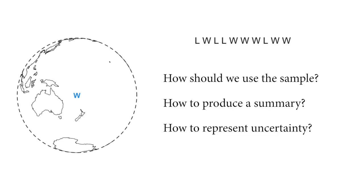Our estimand is the proportion of the globe covered by water. Here's an animation of the idea: we toss the globe a number of times, and when it comes to rest we mark where our finger is — water or land. We can do this nine or ten times. The questions we'll develop and answer are: how should we use the sample to produce an estimate, and how can we summarize that estimate? What's very important is representing the uncertainty, because estimates in Bayesian inference are never points — they are distributions.